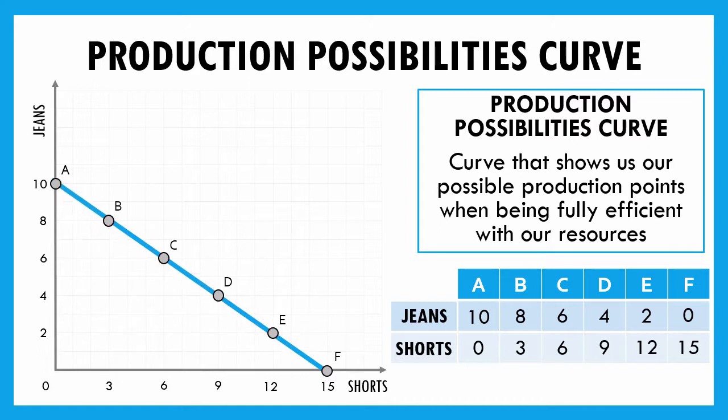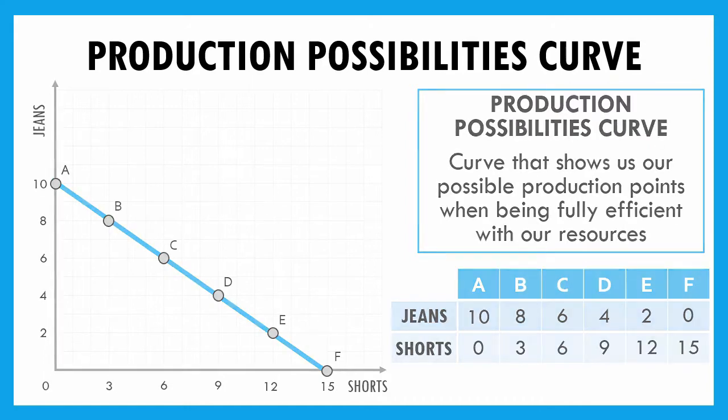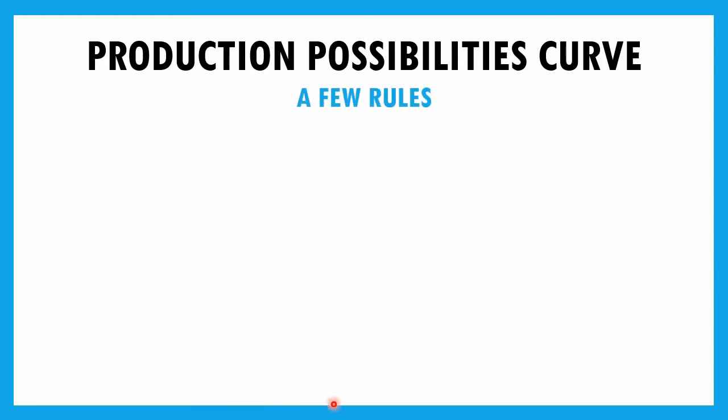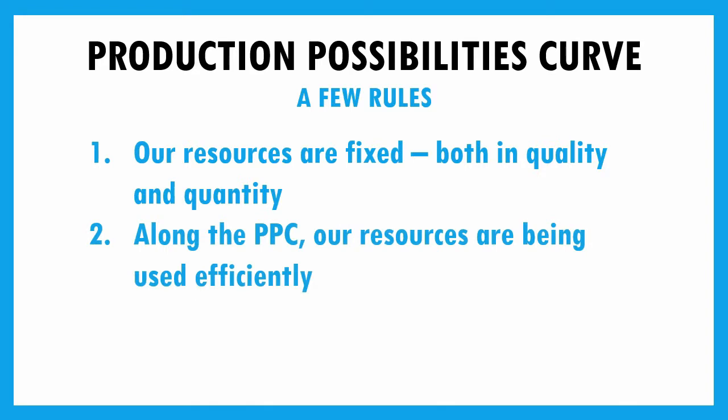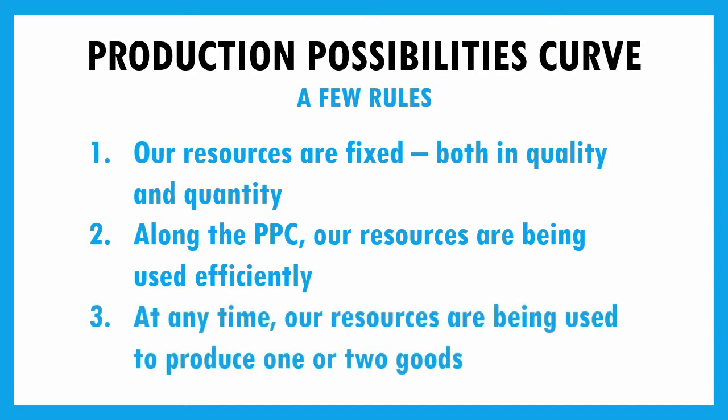No matter what point we're at along that curve, we are using all our resources and being fully efficient. There are a few rules for the production possibilities curve. First, our resources are fixed — both in quality and quantity. We only have so many sewing machines, so much material, so many workers. Second, anytime we're along the PPC, we assume resources are being used efficiently. And third, our resources are only being used to produce one of two goods. The reason we play by these rules is that economic models take big ideas and simplify them for us.